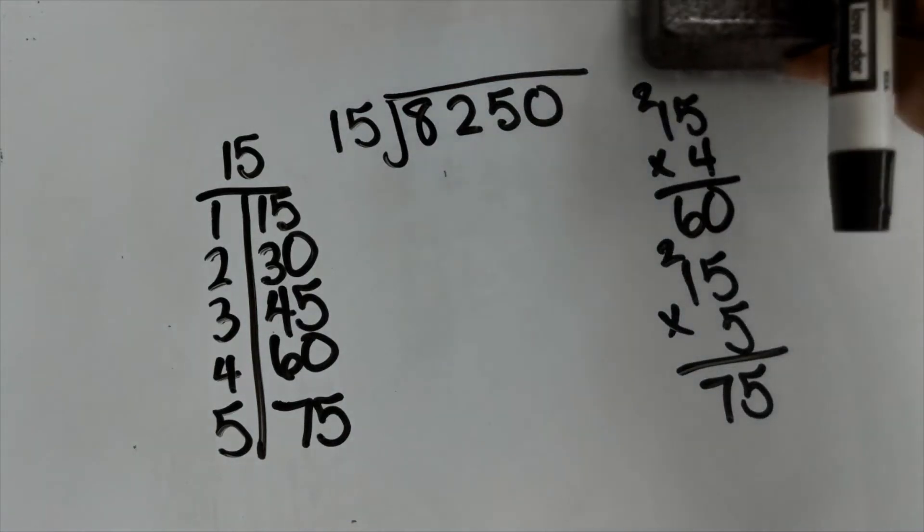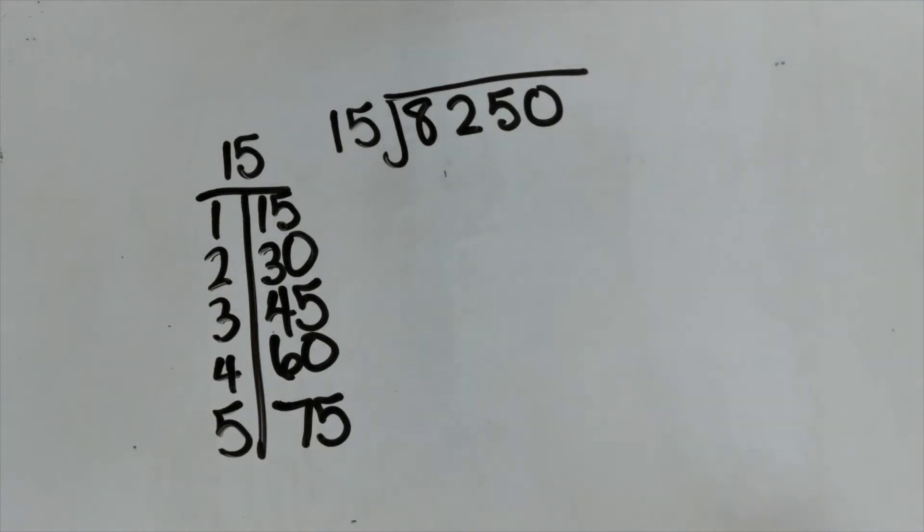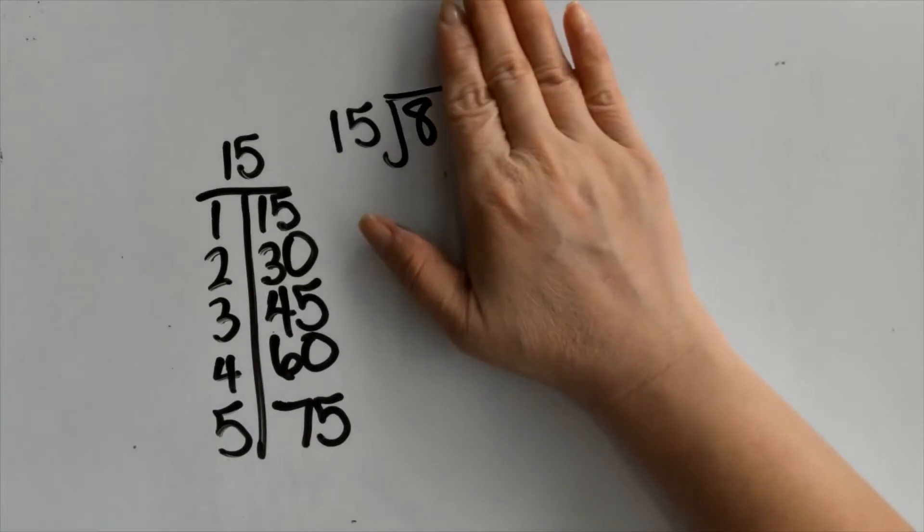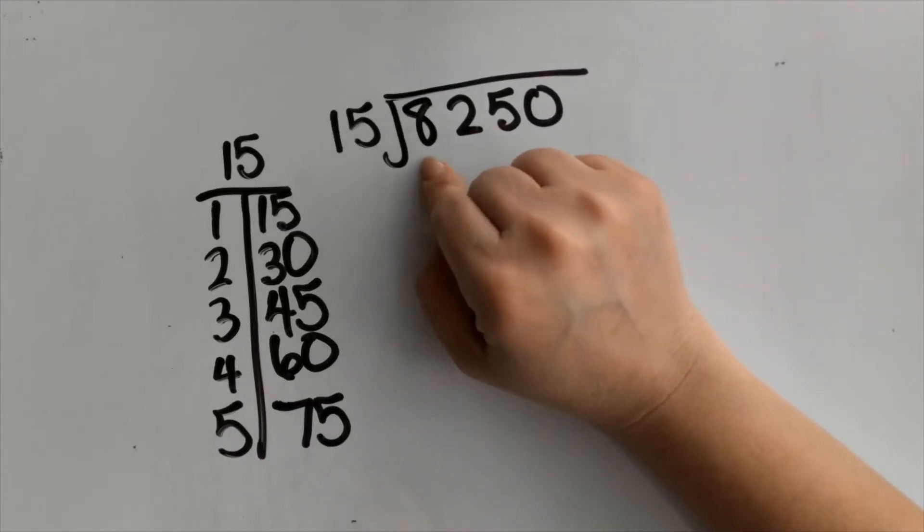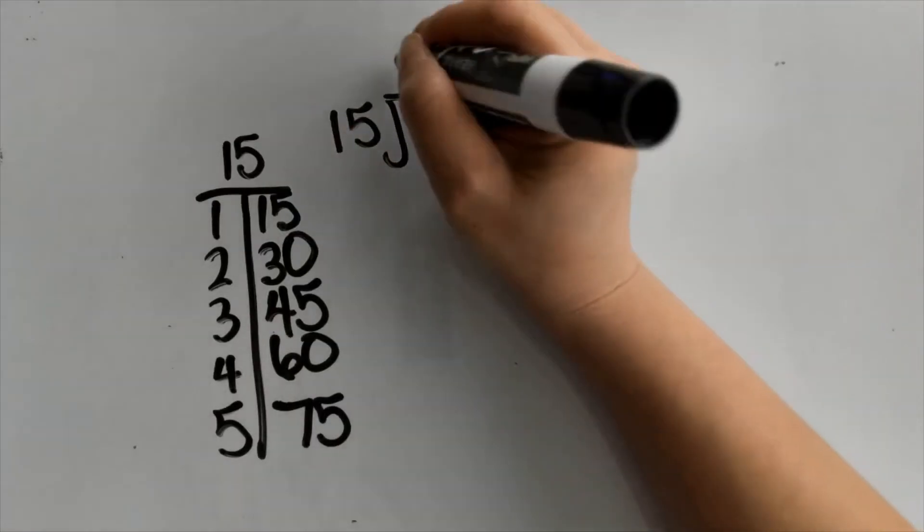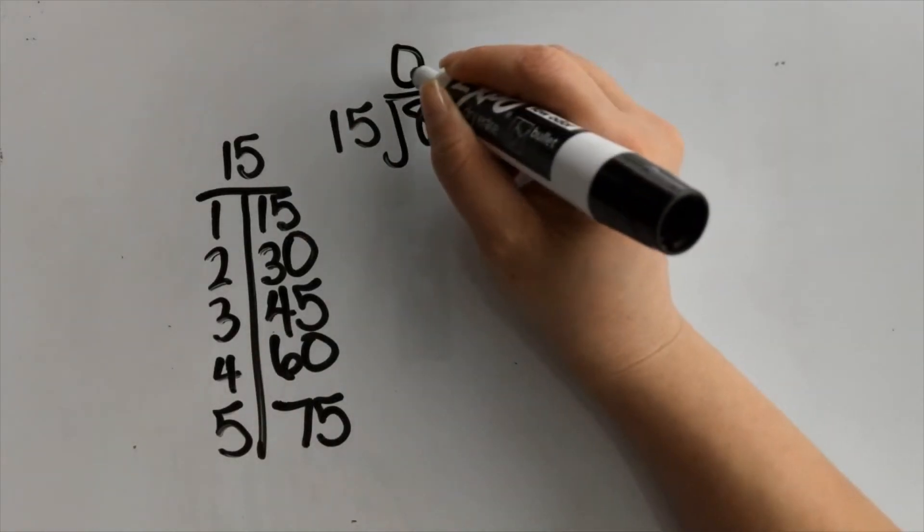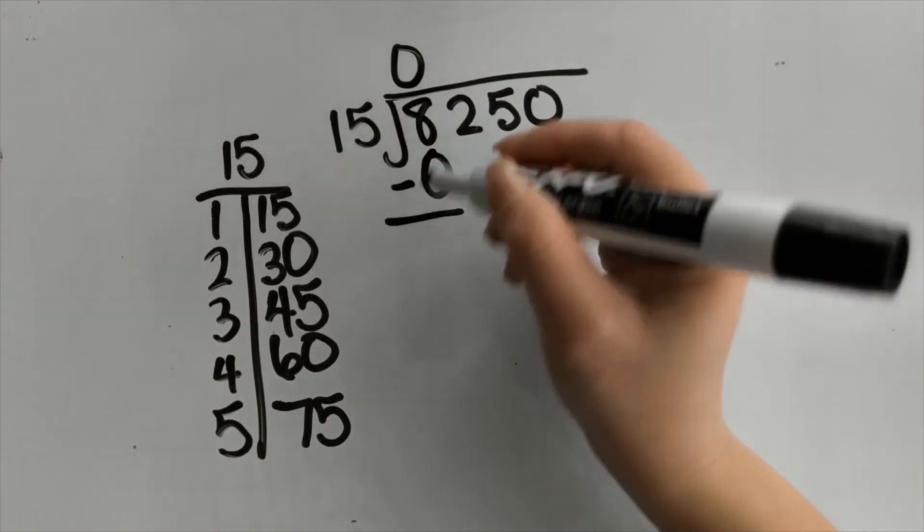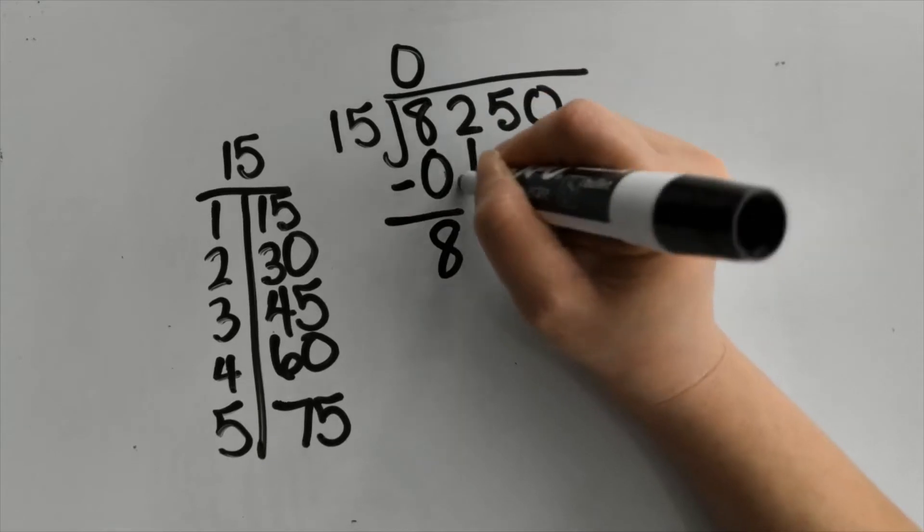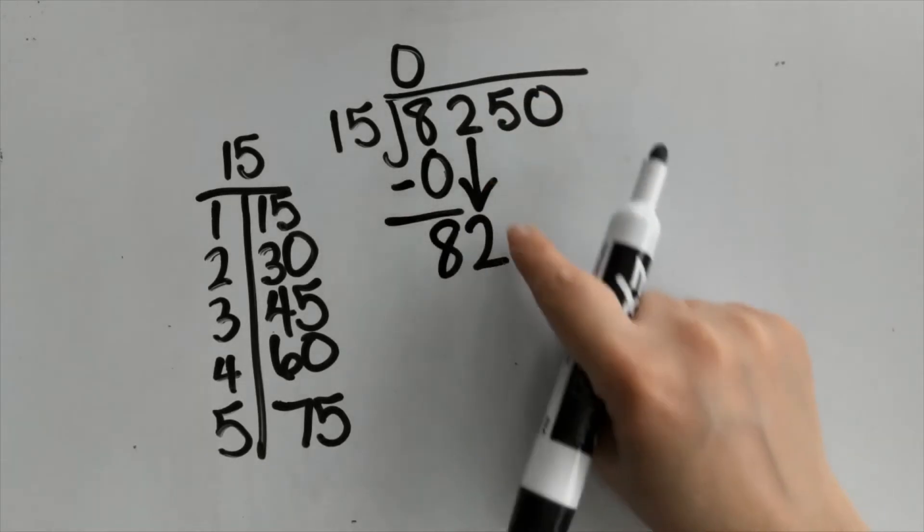All right, so let's go ahead and start dividing. Now we're going to use this to help us divide. I like to cover my numbers. So in this case I have 8 divided by 15. I know 8 is smaller than 15, that means I don't have enough, I can't divide. So now I'm going to multiply 0 times 15 is 0.